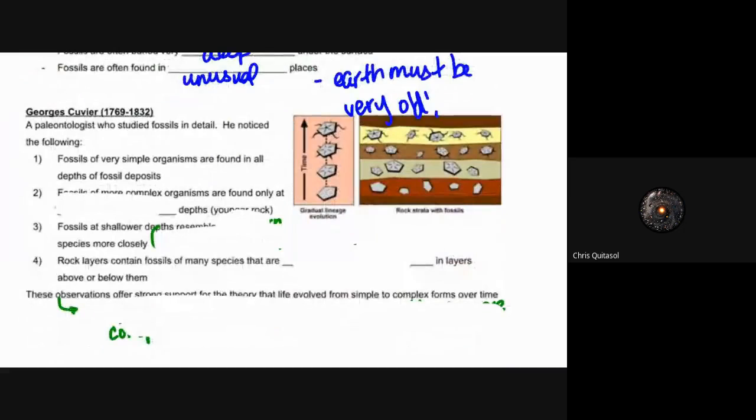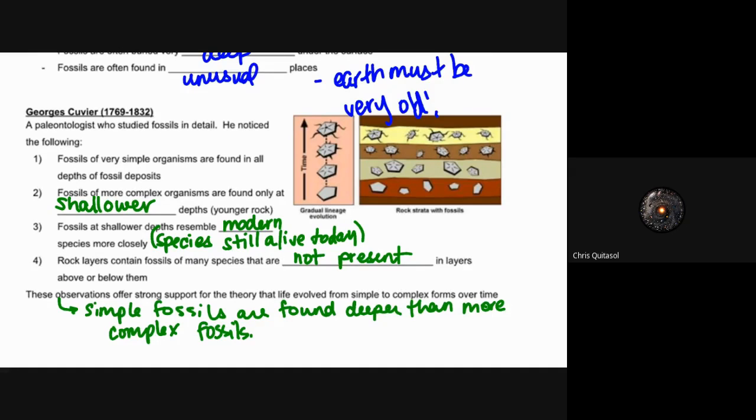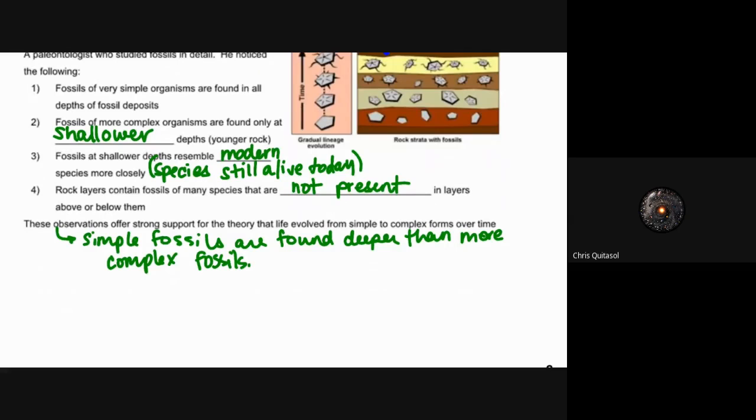Cuvier was a paleontologist in the mid to late 1800s who studied fossils in detail and he noticed four main things. Fossils of very simple organisms are found in all depths of fossil deposits. Fossils of more complex organisms are found only at shallower depths or younger rock. This is an interesting idea because fossils at shallower depths resemble modern species today, and the idea that they were closely related at shallower or younger rock levels was interesting. Those rock layers contain fossils of many species that are not present in either layers above or in layers below, suggesting that strong support for the theory that life changed and evolved from simple to complex organisms. Those simple fossils are found deeper and the more complex ones are found closer to the surface.